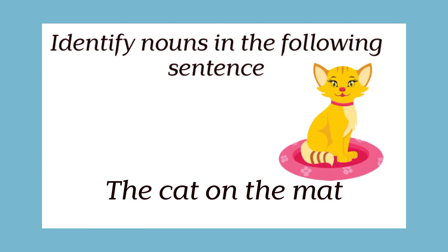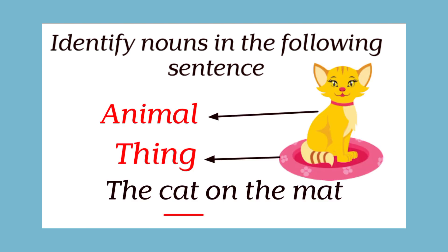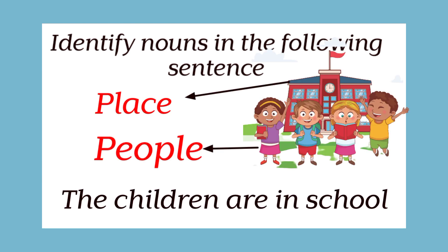'The cat on the mat.' Cat is the name of an animal, and Mat is the name of a thing. 'The children are in school.' Children is the name of a group of people, and School is the name of a place.